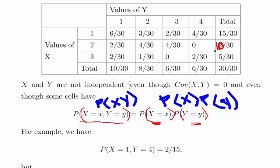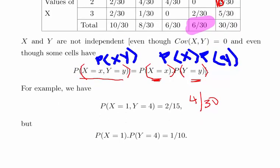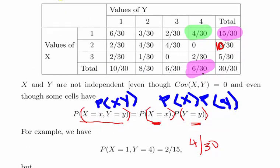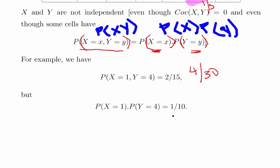So, the probability of x equal to 1 and y equal to 4 is 4 over 30. If they were independent, the product of the marginal probabilities for those particular values would also give 4 over 30. But actually it's 1 fifth times 1 half, which gives 1 over 10 — and that is not equal to 4 over 30, so in this case they're not equal to each other, and that actually disqualifies it as being independent.